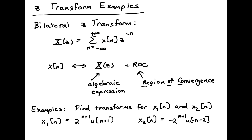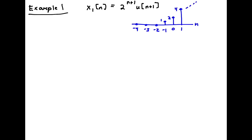The two examples we're going to do in this video are for the signals x1(n) and x2(n). For the first example, we're going to take the Z-transform of x1(n), the sequence 2^(n+1) u(n+1). I've sketched this sequence here. It starts at n equal minus 1, due to the unit step u(n+1) that starts at minus 1 and goes to the right.